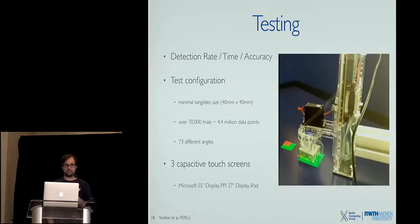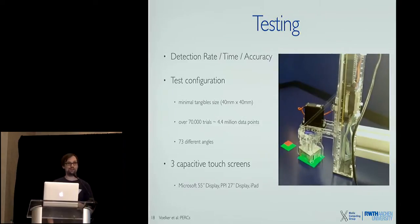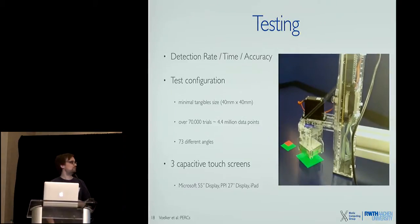We actually wanted to know how good this is working. So we created this little robot who placed the tangible on the screen for a long time, several days in a row. We wanted to test how good is the detection rate of our system, how long does it take to be detected by the screen, and how accurate is the detection. So we made a test configuration. We took one of the tangibles, the smallest tangibles that we can build that was detected, about four by four centimeters. It depends a little bit on the screen type but four by four centimeters works basically on all the screens that we tested. We made over 70,000 trials and we also rotated the tangibles so that we have these angles where we only detect two touch points to see if our system is actually working.